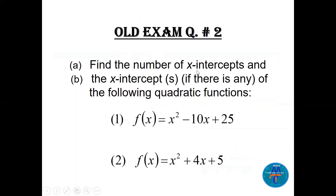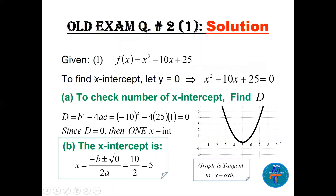Question two: find the number of x-intercepts and find the x-intercepts if any. There are two functions, each with two parts. For the first one, to find the x-intercepts let y = 0, and check using the discriminant b² - 4ac. In this case the discriminant = 0, meaning one x-intercept only. Using the quadratic formula, the graph is tangent to the x-axis at x = 5.